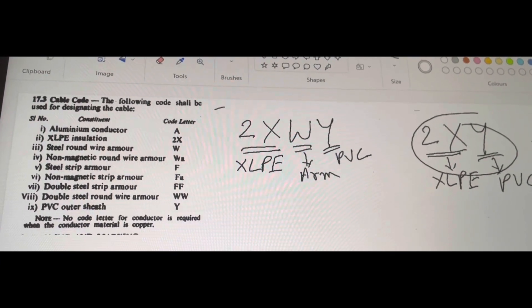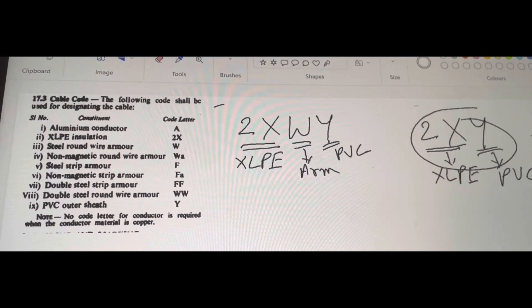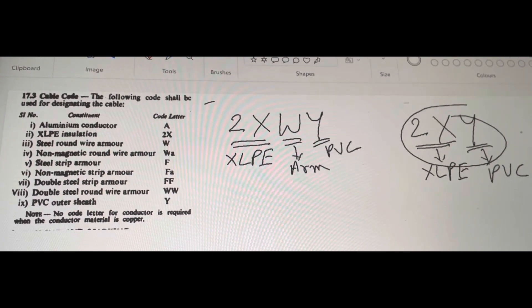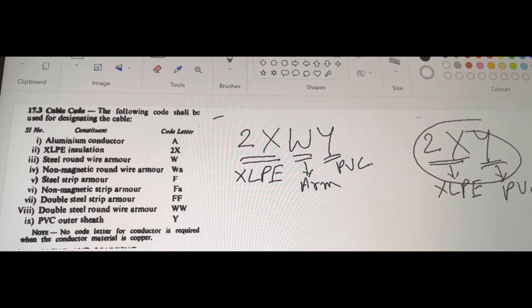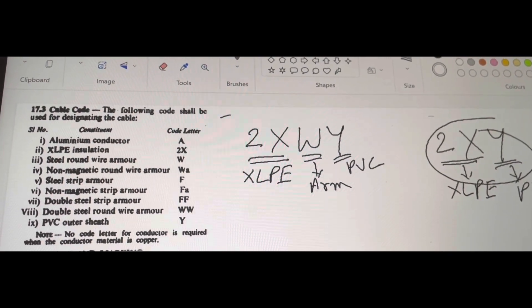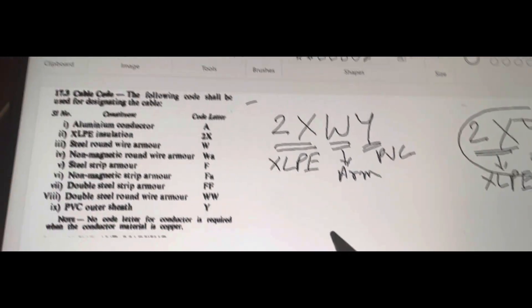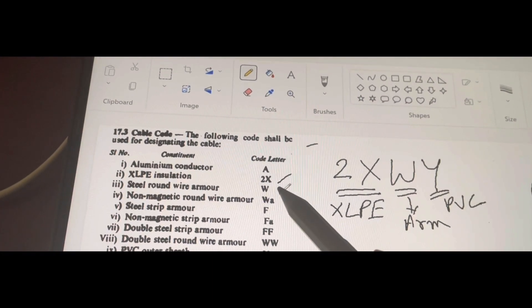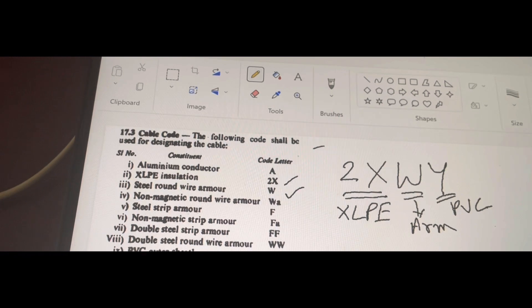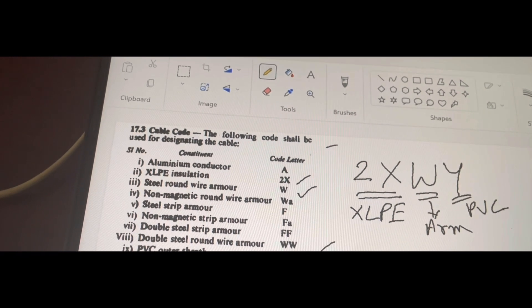And these cable codes are given in Indian standard 7098 part 1. And on the screen you can observe there is a table which indicates the meaning of these letters. And 2x this is nothing but XLPE insulation and w indicates steel round wire armor and y indicates PVC outer sheath.